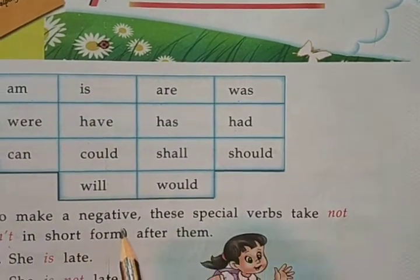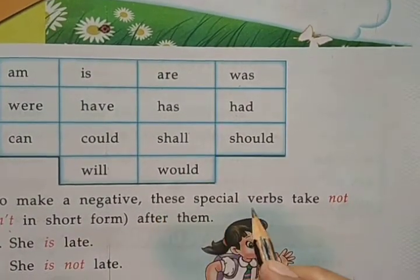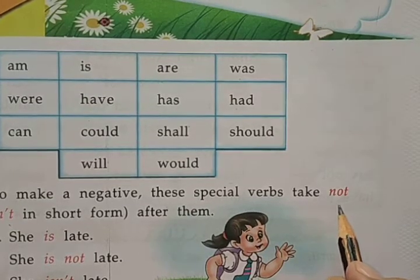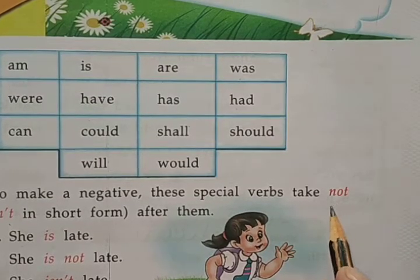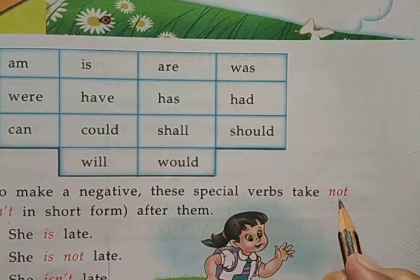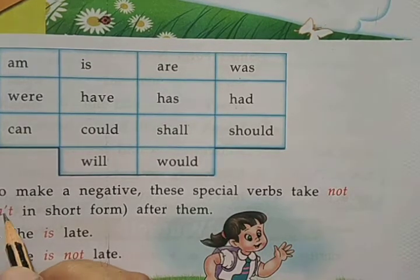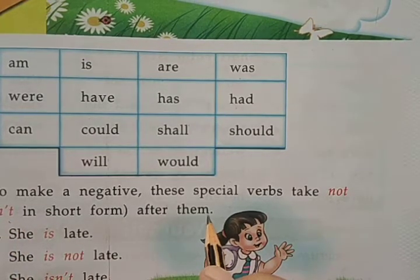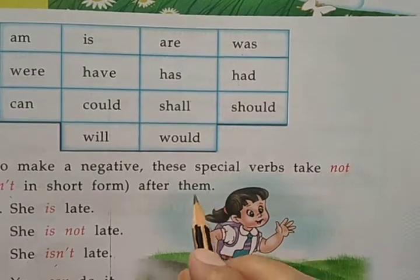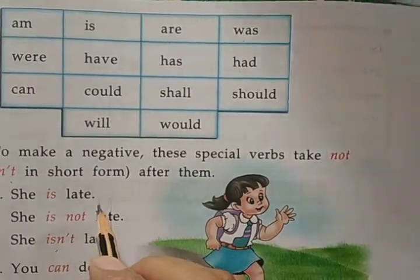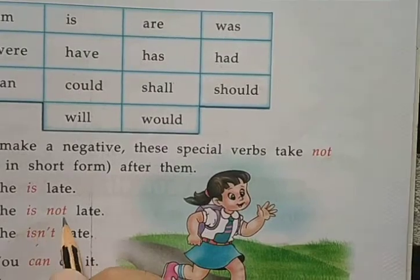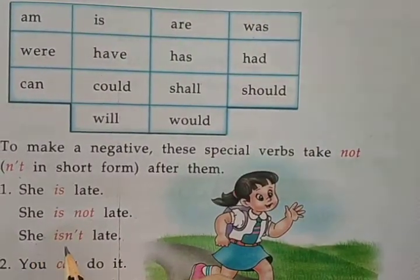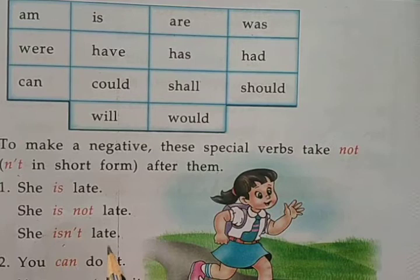To make a negative, these special verbs take NOT. The short form of NOT is placed after them. For example: She is late. She is not late. She isn't late.